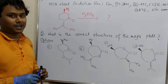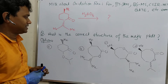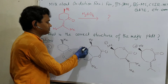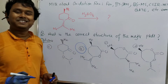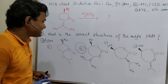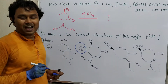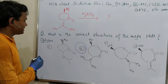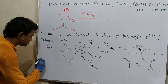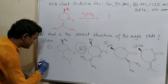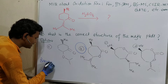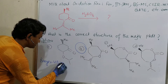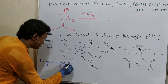Let me give you the final answer of this one. The answer is this one. Now the question is, how this one? As I asked, what is the name of this reaction? The name of this reaction is Baeyer-Villiger Oxidation. Baeyer-Villiger Oxidation.